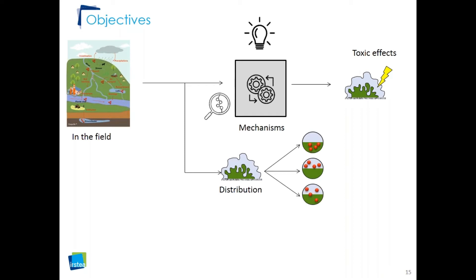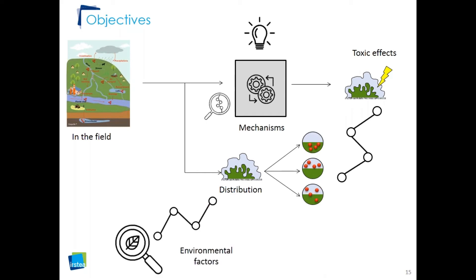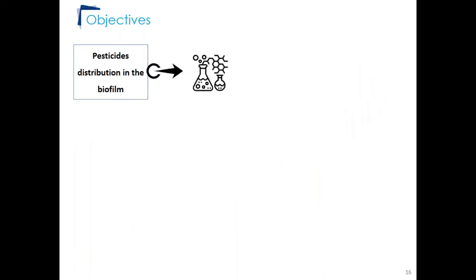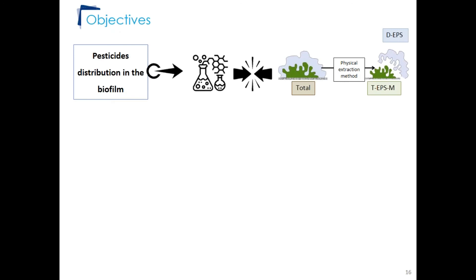One objective of the thesis was to characterize the mechanisms involved between these two stages. Another objective was to study pesticide distribution in the biofilm — to know whether they accumulate in the microorganisms, in the EPS matrix, or in both fractions — and to make the link with toxic effects. Finally, the objective was to determine if environmental factors can modify these mechanisms. To study pesticide distribution, the EPS had to be extracted from the whole biofilm.